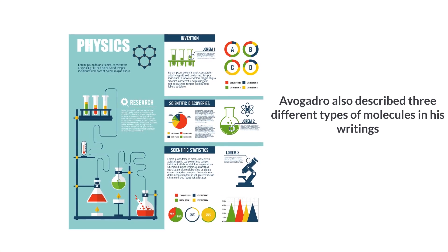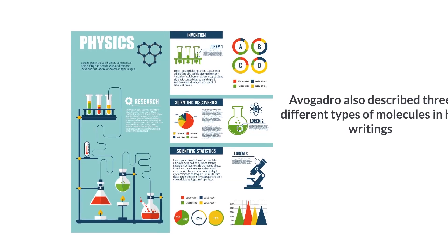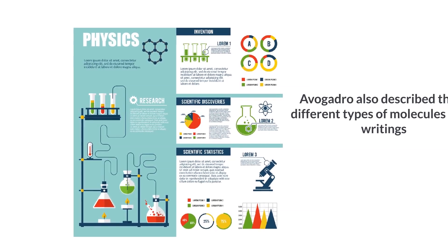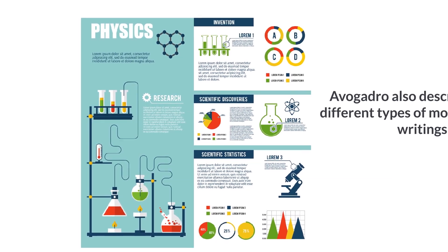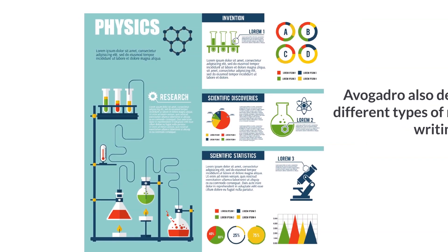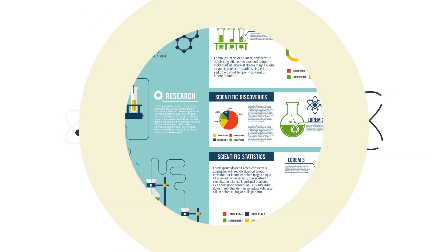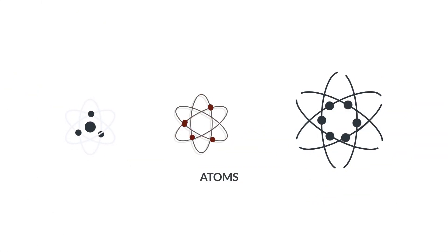Avogadro also described three different types of molecules in his writings. The integral molecules, which are very similar to our present-day molecules. Constituent molecules, these form part of an element, and elementary molecules, which are very similar to what we refer to as atoms now. His study on elementary molecules was highly influential in the field of atomic theory.